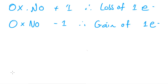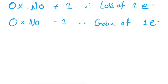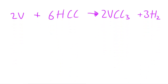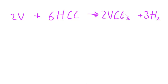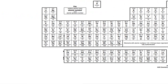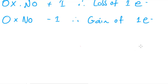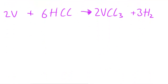Now I'm going to write out an equation and analyse it in terms of oxidation numbers. I've written up this equation — the V in the equation is vanadium. You can see vanadium on the periodic table here. This equation involves vanadium reacting with HCl, producing what would probably be vanadium trichloride and hydrogen gas.